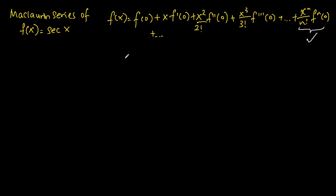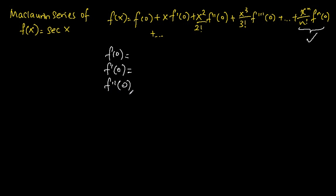Before we are able to express the function as the Maclaurin series, we need to find f(0), which means evaluating the function at x equals 0; f'(0), differentiating the function one time and evaluating at x equals 0; and differentiating the function two times, after which evaluating at x equals 0.